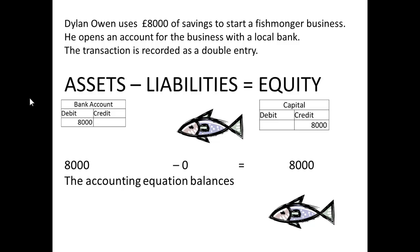Let's take a simple idea. Dylan Owen, with £8,000 of savings, starts a fishmonger's business by opening an account with the bank. He deposits £8,000 in the bank — that's his asset. So we debit the bank account with £8,000. The business is now worth £8,000, so we credit a capital account with £8,000.